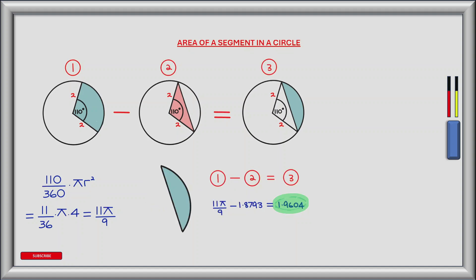So now we've found the area of the triangle indicated by the red shaded area in circle 2. All we need to do is subtract this value from the area we found in circle 1, which was 11 pi divided by 9. This will then give us the area of the segment indicated by circle 3. So our computation is 11 pi divided by 9, which is the area of the sector, minus 1.8793, which is the area of the red triangle shown in circle 2. And this gives us a value of 1.9604, which is the area of the segment shown in circle 3.